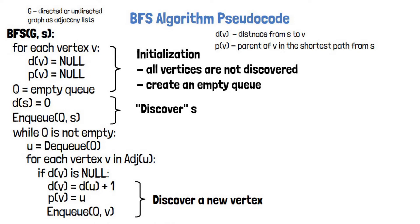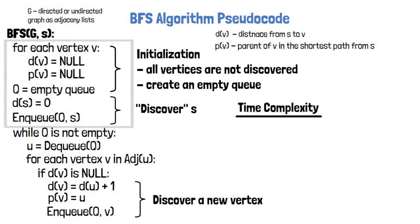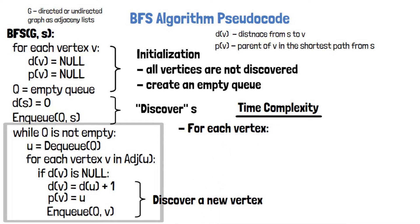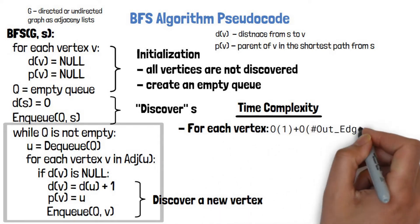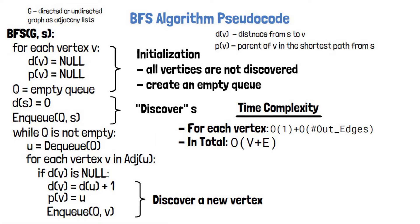We'll see an example very soon, but first let's talk about time and space complexity. Before the while loop, the time complexity is O(V) for the initialization loop, as all other operations are constant time. In the while loop, each time we dequeue a vertex we do O(1) for the dequeue operation plus O(outgoing edges) for the for loop. Each vertex is added to the queue at most once, thanks to the null distance check. So in total, in the worst case, we go over all vertices and their outgoing edges, giving us O(V + E), which is a desirable time complexity in graph algorithms.